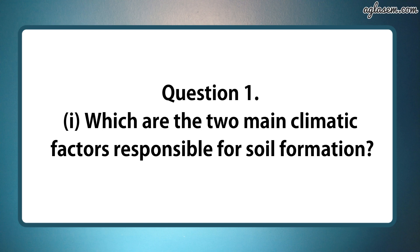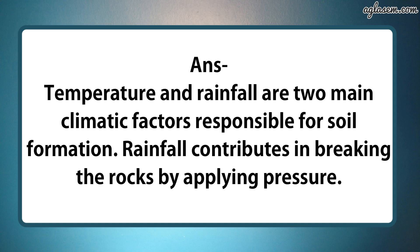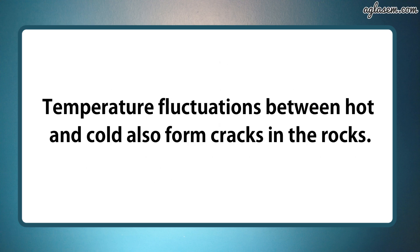Part 1 says, which are the two main climatic factors responsible for soil formation? So the answer is, temperature and rainfall are the two main climatic factors responsible for soil formation. Rainfall contributes in breaking the rocks by applying pressure. Temperature fluctuations between hot and cold also form cracks in the rocks.